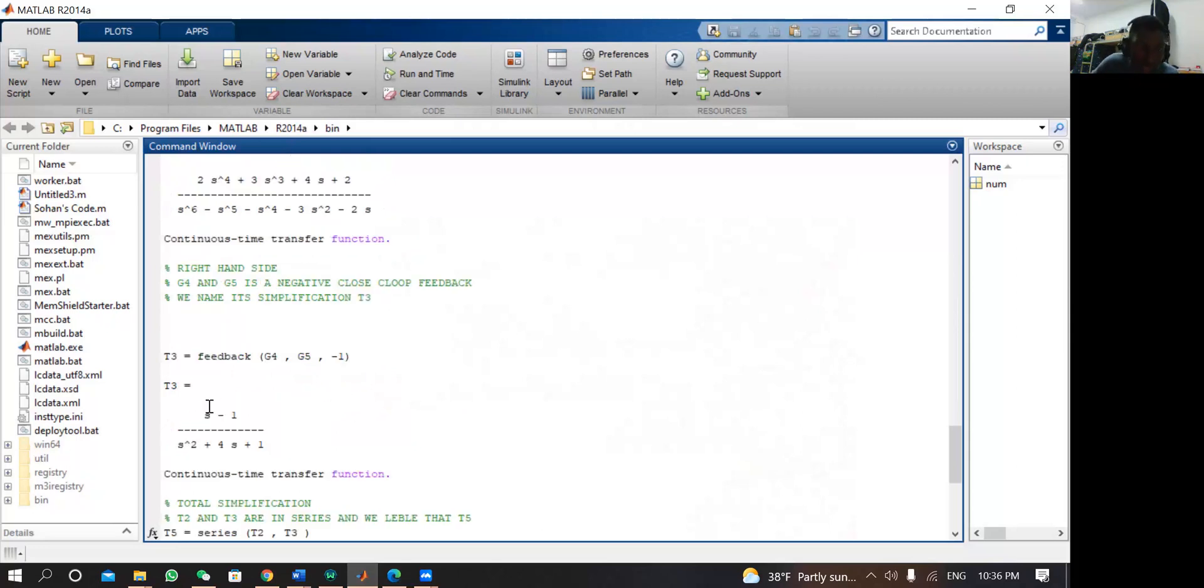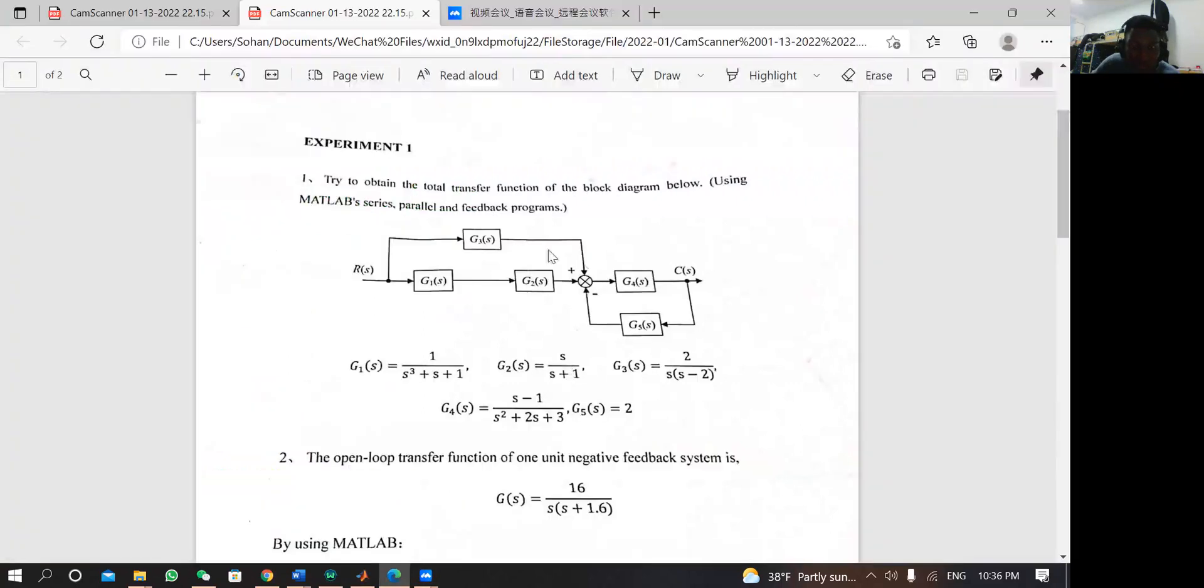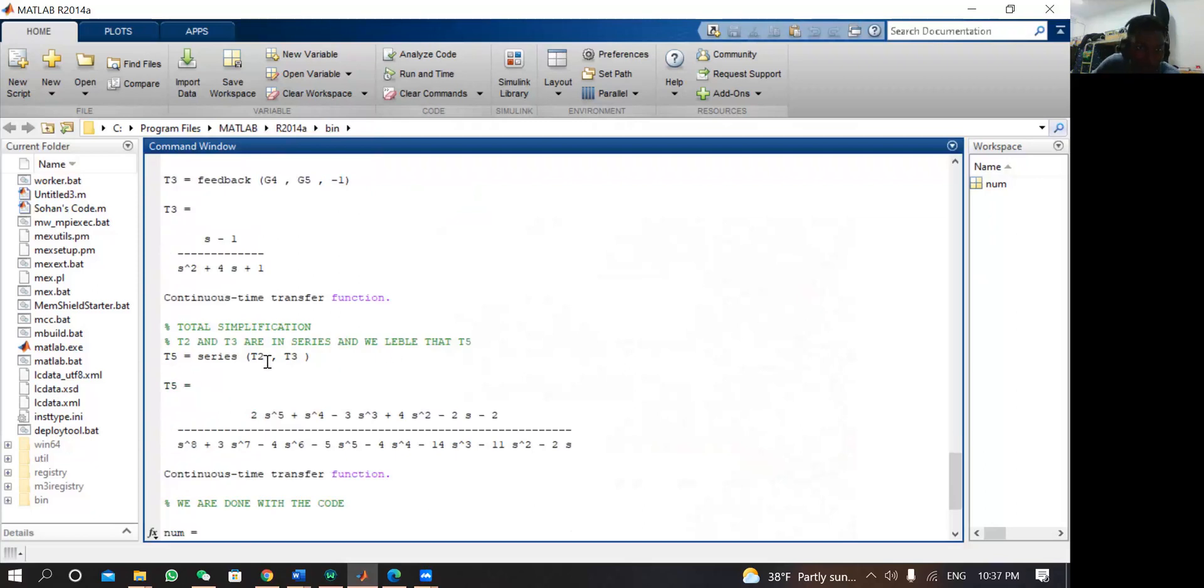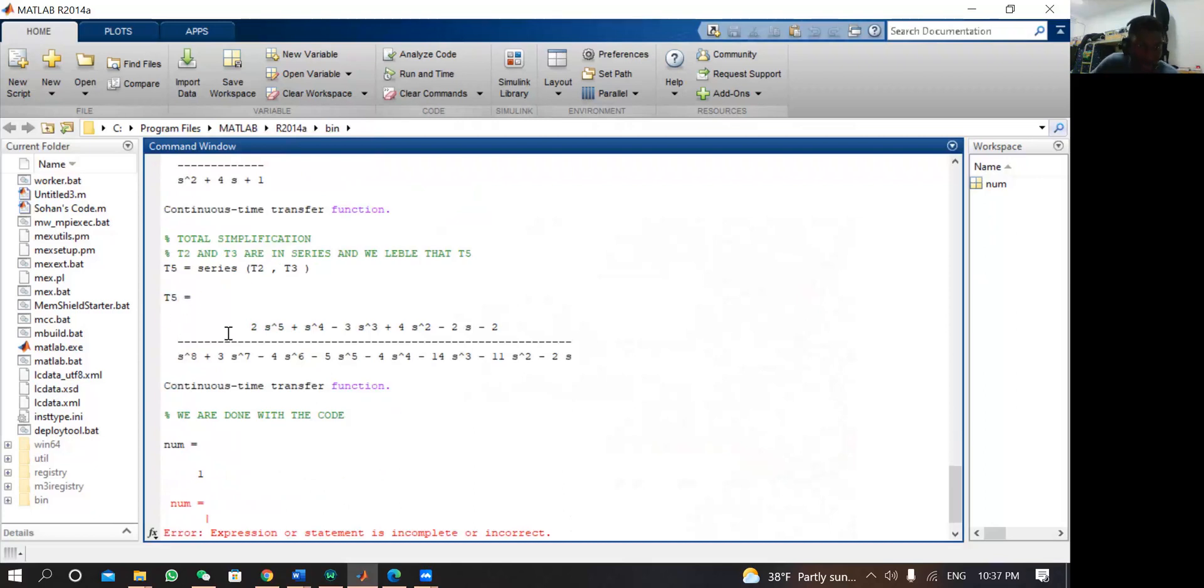Now that we have simplified this into one single thing called T2 and simplified this into T3, the simplification of these two are in series. So we are going to combine them in series. T5 equals T2, T3 in series. Finally we have T5. This is the final transfer function of the simplification. This is all about question one.